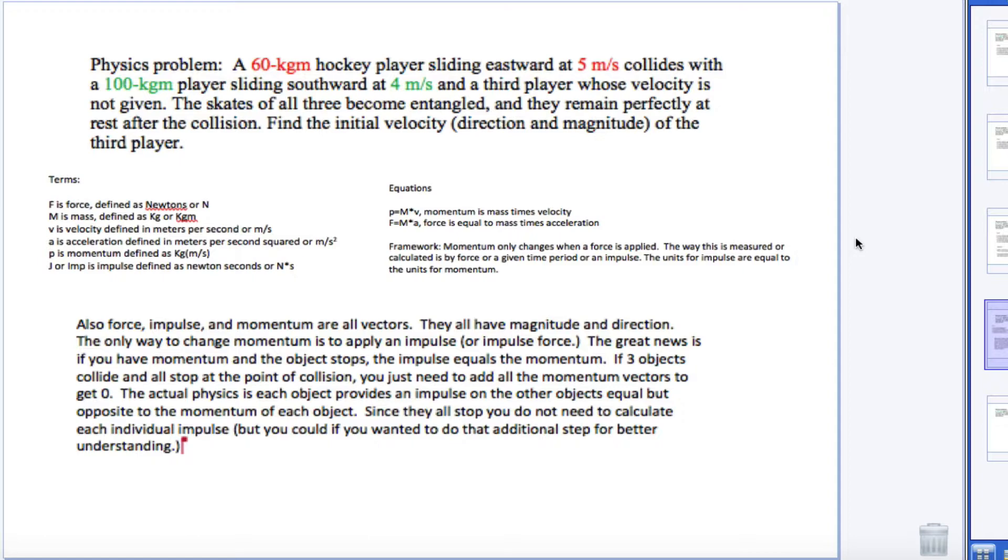So if all three objects collide and all stop at the point of collision, really all you have to do is add all the momentum vectors together to get zero. Because the impulses that they apply on everyone, since their momentum goes from whatever it is to zero, their entire momentum is converted to impulse. So the easy way to look at this is just add up all of the vectors, and when you add all of the vectors you should get zero because nobody's moving at the end.